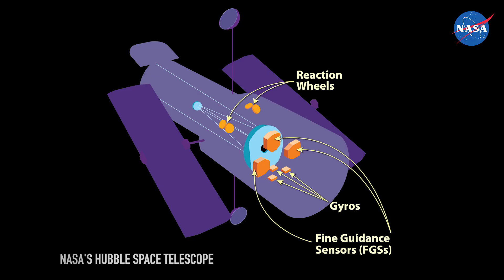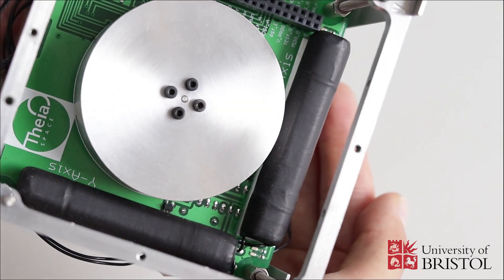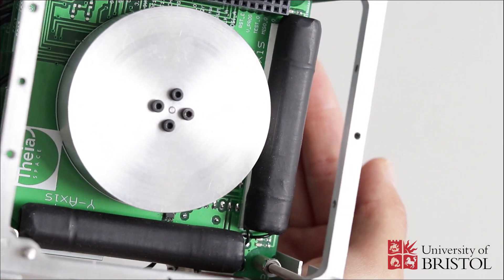Usually, three or more reaction wheels are used on a spacecraft to provide full three-axis attitude control and stability. However, the ESAT has only one reaction wheel for demonstration.